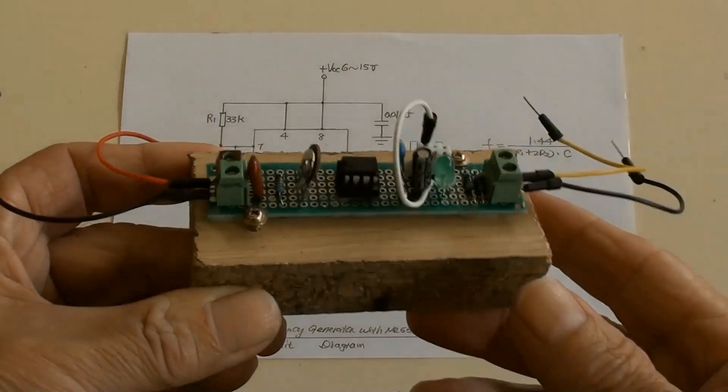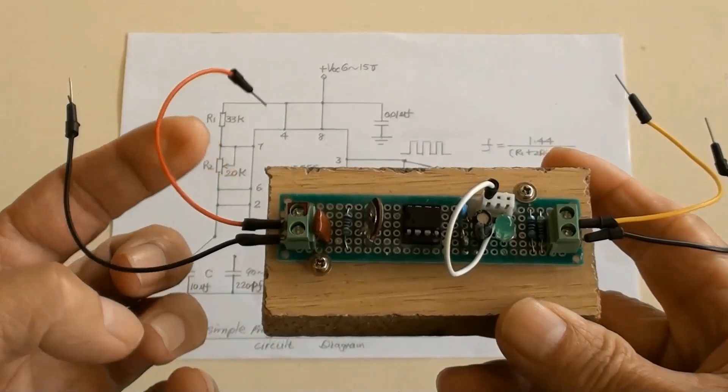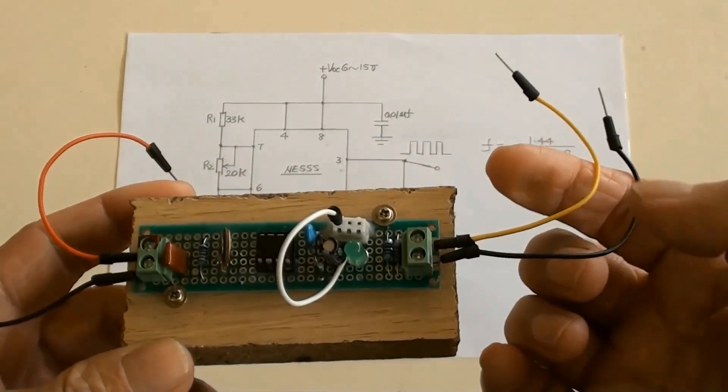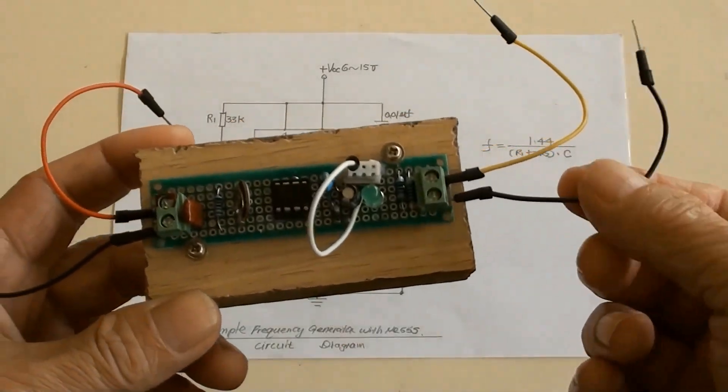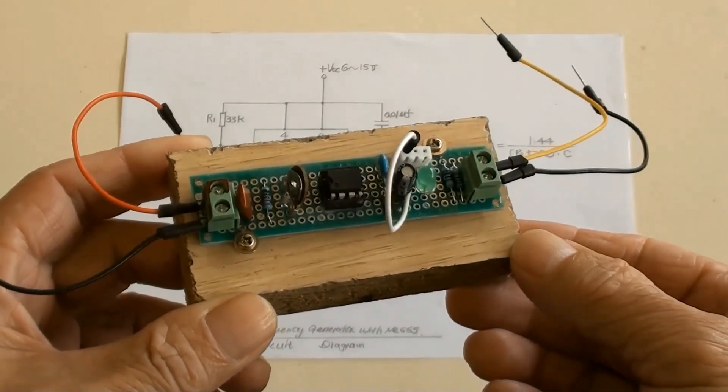For convenience, the breadboard is fixed on a piece of wood, and wires are connected. Red is for DC positive, black is for DC negative, and yellow is for the output square signal.